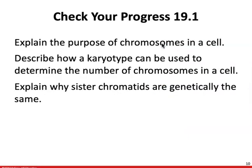We are going to flesh all of this out later on in the chapter. For this part, just be able to explain the purpose of chromosomes in a cell, describe how a karyotype can be used to determine the number of chromosomes in a cell, and explain why sister chromatids are genetically the same. Make sure you read through a little bit about sister chromatids, what they are, and why they are genetically identical.